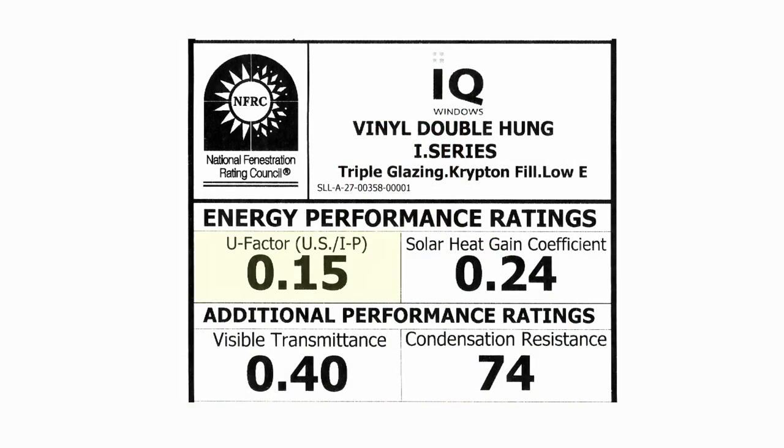The Ultimate IQ glass system delivers a stellar NFRC 0.15 U factor that's two times better than ENERGY STAR's 0.30 minimum U factor, 0.24 solar heat gain coefficient, 0.40 visible transmittance, and an industry-leading condensation resistance rating of 74.